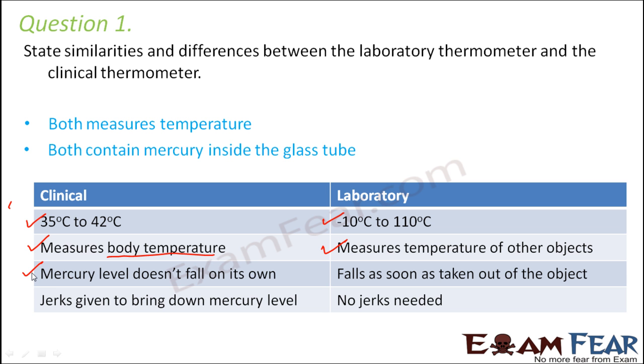In clinical thermometer we have a kink which is present and due to that kink the mercury level doesn't fall on its own and we need to give physical jerks to the thermometer to bring the mercury level down. But that is not the case with laboratory thermometer. Here as soon as you take the thermometer out of that particular object the mercury level falls down. So therefore in this case no jerks are needed but at the same time it cannot be used to measure the temperature of human body.